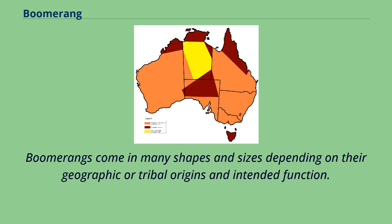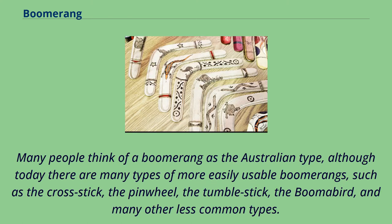Boomerangs come in many shapes and sizes depending on their geographic or tribal origins and intended function. Many people think of a boomerang as the Australian type, although today there are many types of more easily usable boomerangs, such as the cross stick, the pinwheel, the tumble stick, the boomer bird, and many other less common types.